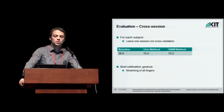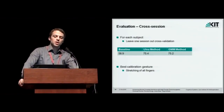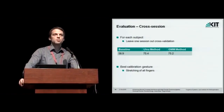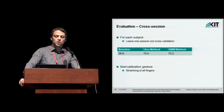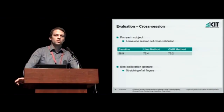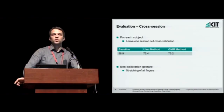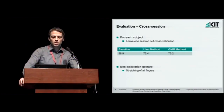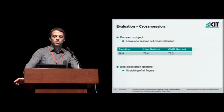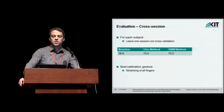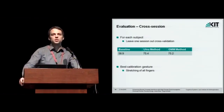So for the cross session evaluation, we did a leave one session out cross validation for each subject. And we compared our methods for estimating the electrode shift with a baseline. That means we just did the evaluation without applying any shift. So we reached about 58.9 percent for the baseline and get around 75 percent for the two methods. So there is no difference between the two methods.